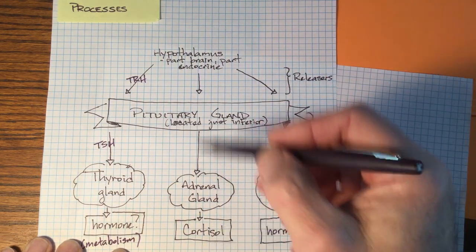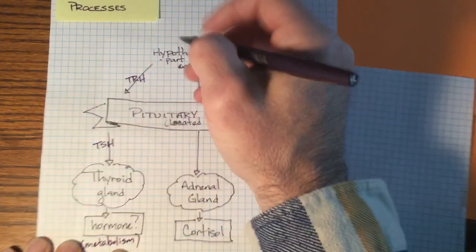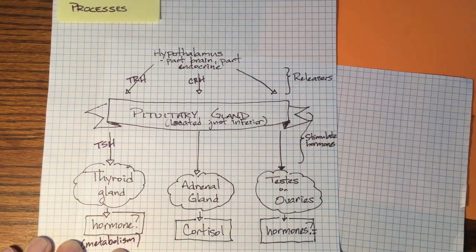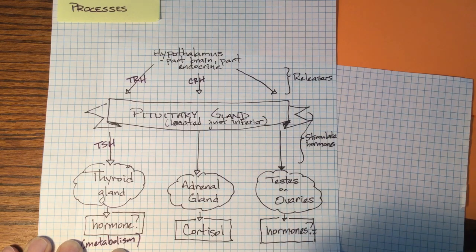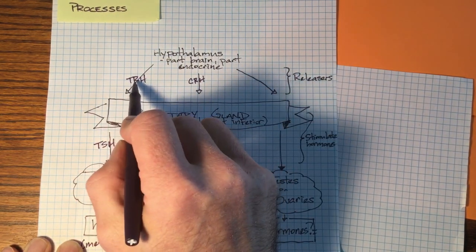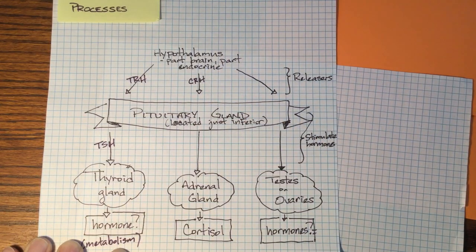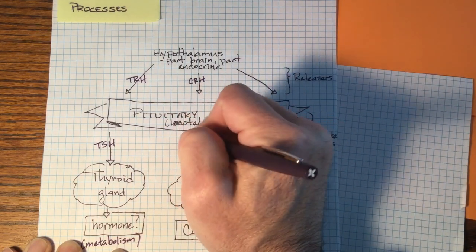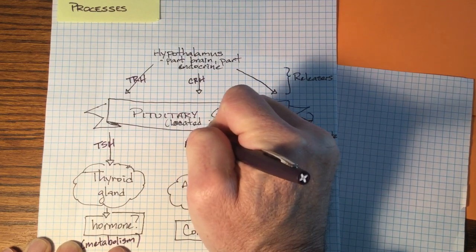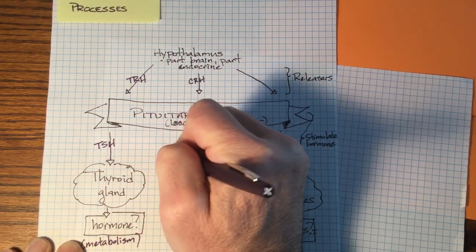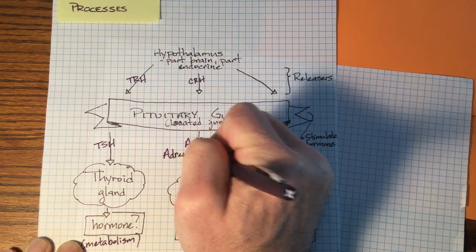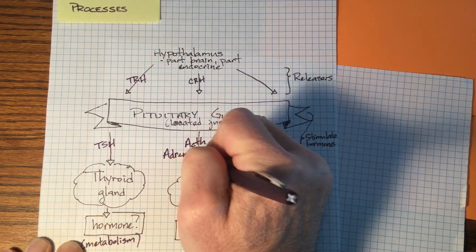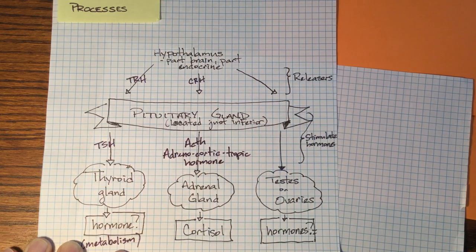As far as the adrenal gland goes, the hypothalamus will release a hormone called CRH, otherwise known as cortisol-releasing hormone. And the good part about YouTube is that if you don't hear what CRH stands for, you can actually go back and write it down. So TRH is thyroid-releasing hormone. CRH is cortisol-releasing hormone, and that's going to go to the pituitary, and it's going to tell the pituitary to release a really long hormone called ACTH, otherwise known as adrenocorticotropic hormone.